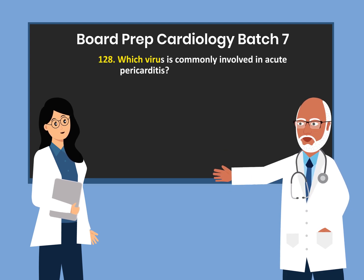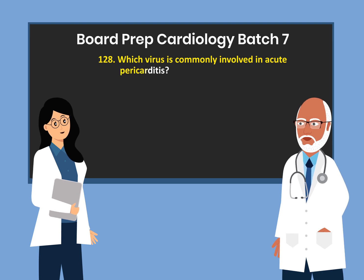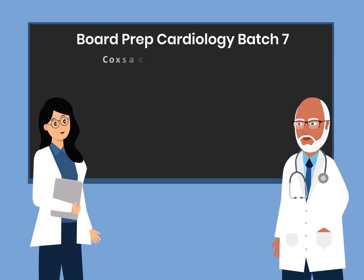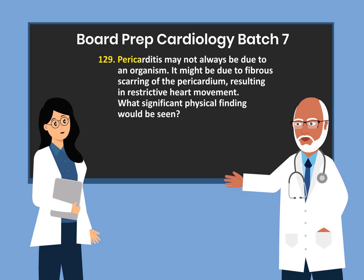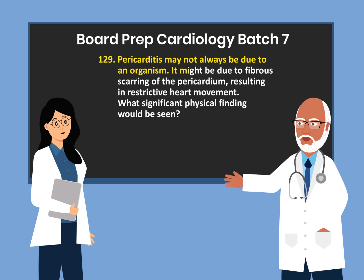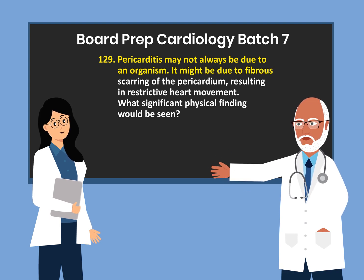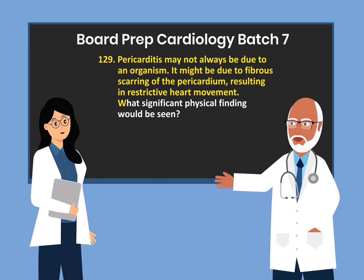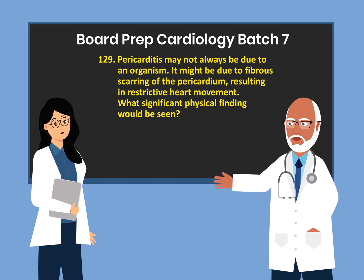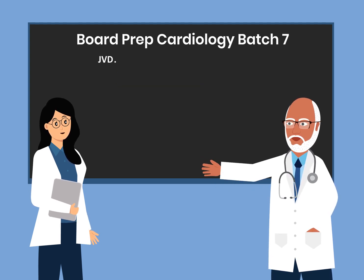Question 128. Which virus is commonly involved in acute pericarditis? Question 129. Pericarditis may not always be due to an organism. It might be due to fibrous scarring of the pericardium, resulting in restrictive heart movement. What significant physical finding would be seen? Jugular vein distension.